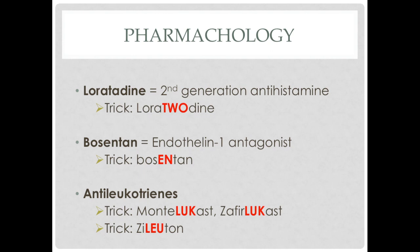Another drug to know is bosentan, which is an endothelin-1 antagonist. I think of the 'EN' in bosentan as 'bos-endothelin-1.' Some antileukotrienes include montelukast and zafirlukast, which sound like leukotrienes and block the leukotriene receptor. Another drug, zileuton, also sounds like leukotrienes, but it blocks the synthesis of leukotrienes rather than the receptors.